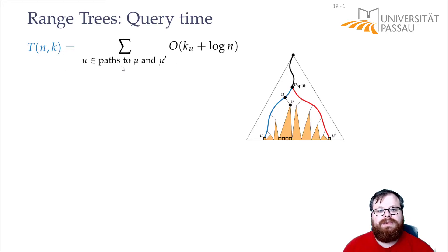So what we have to do is, we look at all these vertices in the balanced binary search tree on the paths to mu, the left boundary, and to mu prime, the right boundary. And now for all of these vertices on the path, we do our one-dimensional range query that takes order of k plus log n time. In this case order of ku, because we only report those points that lie in the subtree. So for every vertex here on this path and on this path, we take time one-dimensional range query.